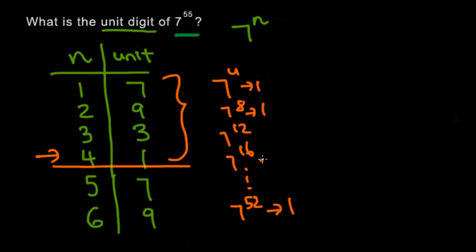It's all going to end in 1. And that's because all these numbers are multiples of 4. So we know that 7 to the power of 52 is going to end in 1.